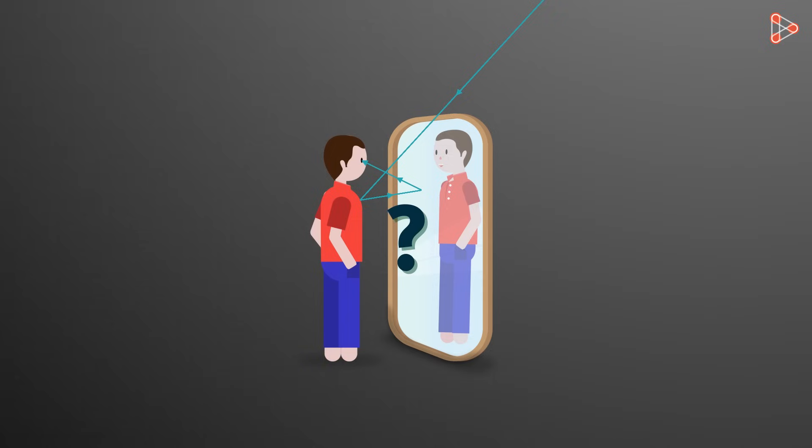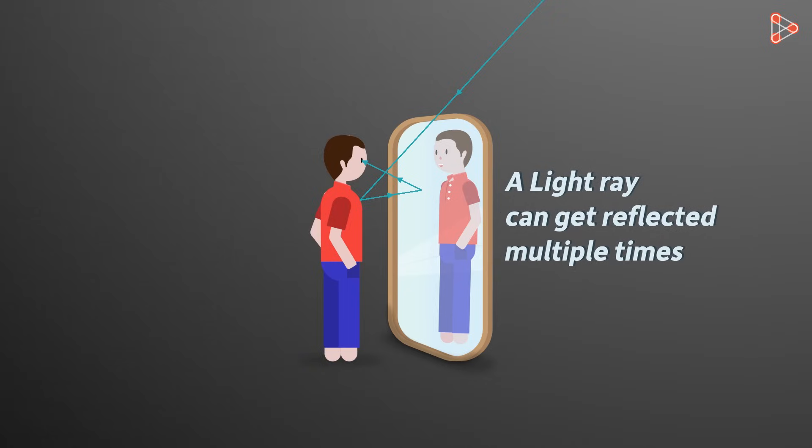So what does this tell us? Yes, this tells us that a light ray can get reflected multiple times. The same thing happens for every other non-luminous object as well.